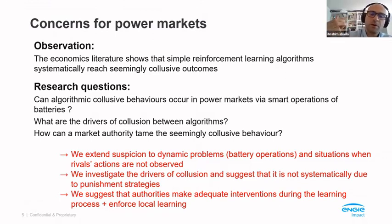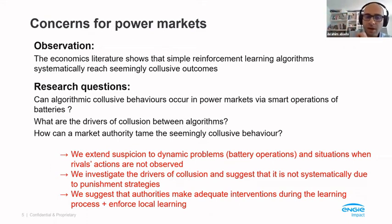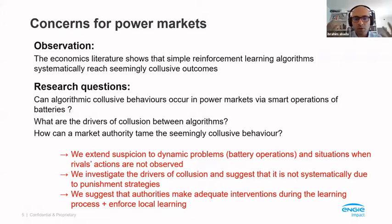The second question was to look at the drivers of collusion — what makes the algorithms learn to cooperate. Some papers, particularly Calvano et al., claim these algorithms are learning to deploy punishment strategies — punishing deviators from the collusive path by triggering price wars. We wanted to see whether, in our more realistic setting, this was the case. And finally, whether behavior is caused by explicit punishment or something else, we thought of ways to regulate the system, because welfare can be destroyed even if you observe algorithms colluding, so you need ways to mitigate the effect.